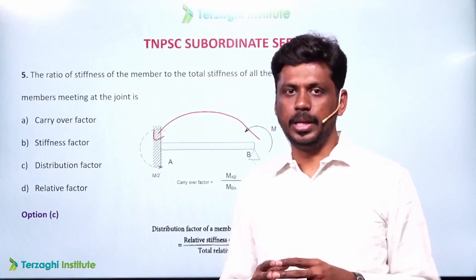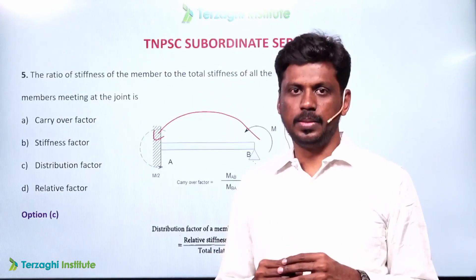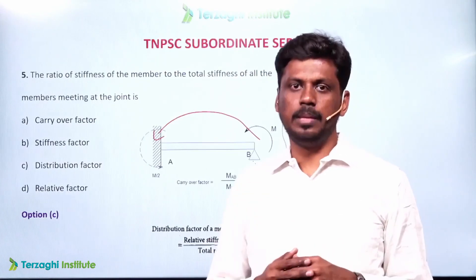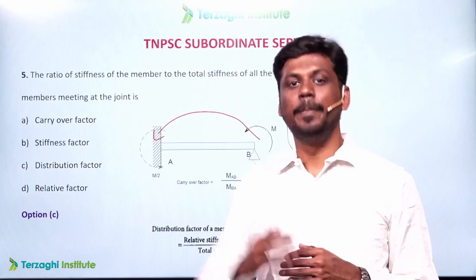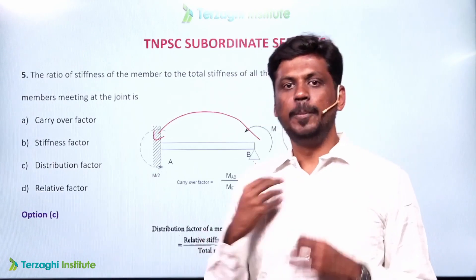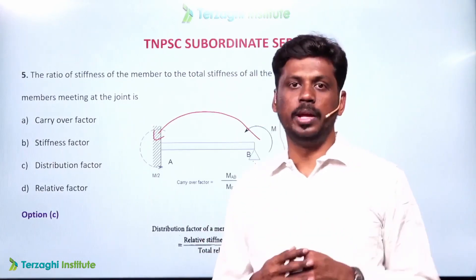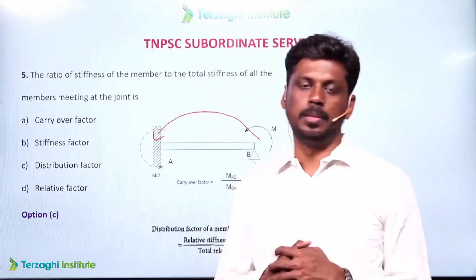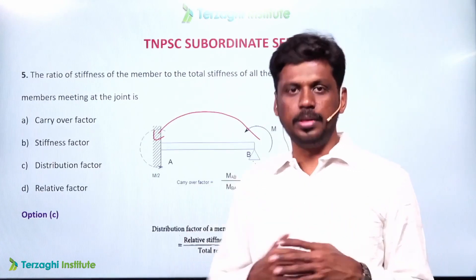That covers the structural analysis questions for TNPAC Subordinate Services. These are easy previous-year questions. We reviewed topics including couple roof and closed couple roof, including which roof type and what span each is applicable for.